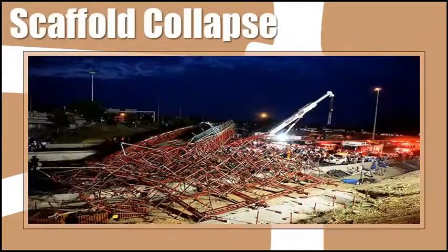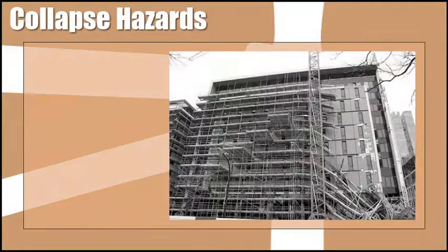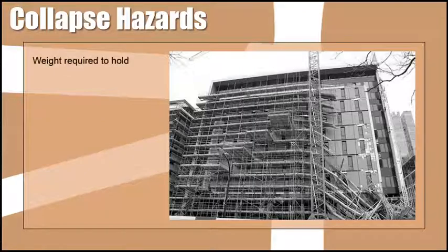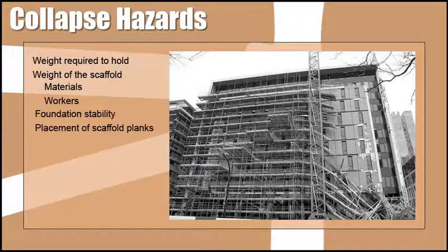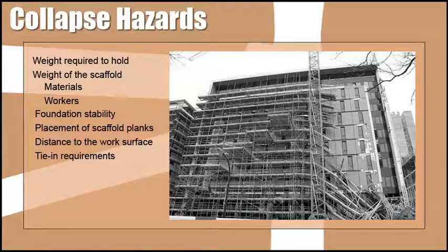When a scaffold gives way or falls over, this is considered a scaffold collapse. The proper erection of a scaffold is essential to preventing collapse. Before erecting the scaffold, a number of factors must be accounted for: the amount of weight the scaffold will be required to hold, including the weight of the scaffold itself, materials, and workers. Foundation stability, the placement of scaffold planks, distance from the scaffold to the work surface, and tie-in requirements are just a few of the other items that must be considered prior to building a scaffold.